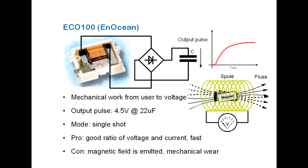The pros are, there is a good ratio of voltage and current and the energy is available shortly after pushing. Furthermore, it is the simplest harvester to use. On the other side, there is a magnetic field emitted and it may mechanically wear out.